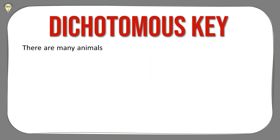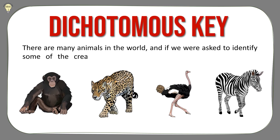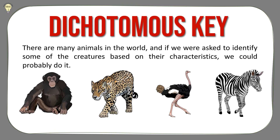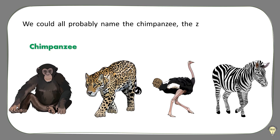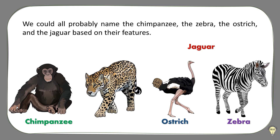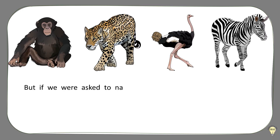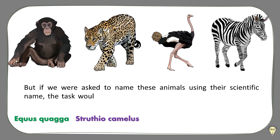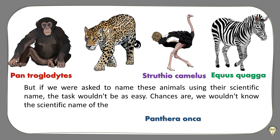There are many animals in the world, and if we were asked to identify some of the creatures based on their characteristics, we could probably do it. We could all probably name the chimpanzee, the zebra, the ostrich, and the jaguar based on their features. But if we were asked to name these animals using their scientific name, the task wouldn't be as easy — chances are, we wouldn't know the scientific name of these animals just by looking at them.